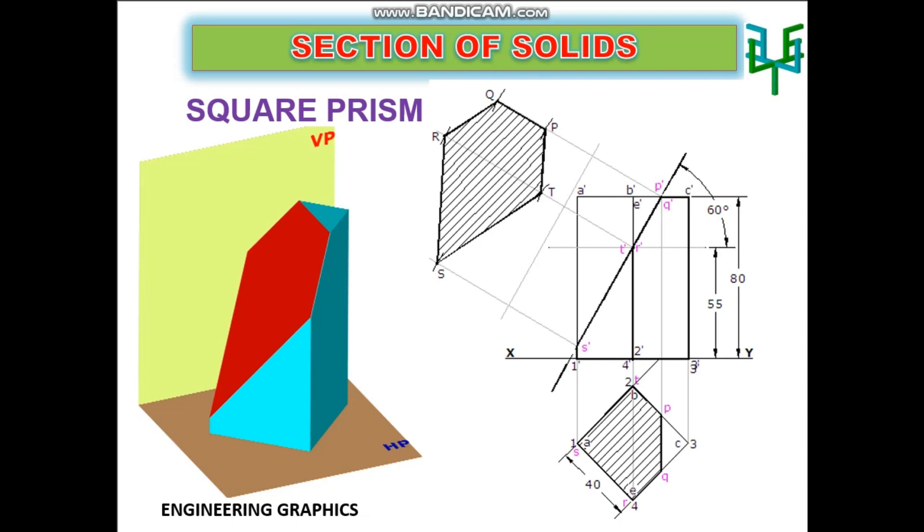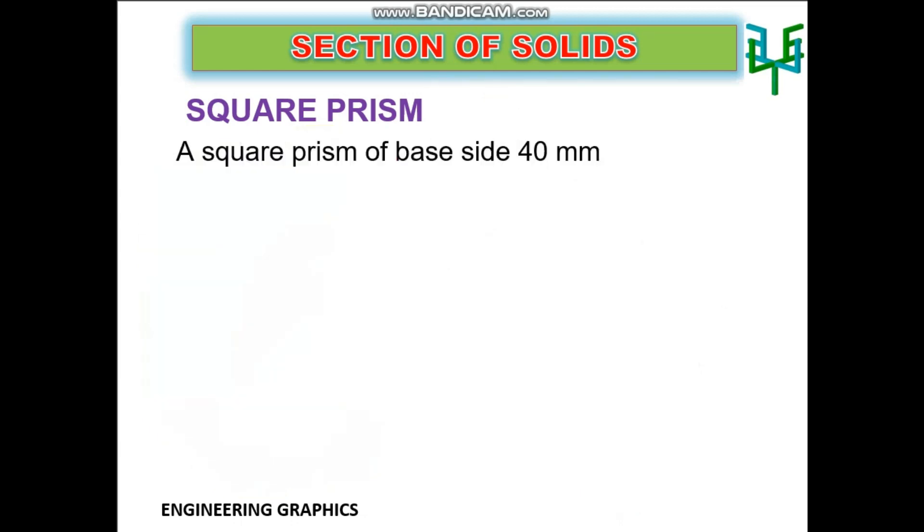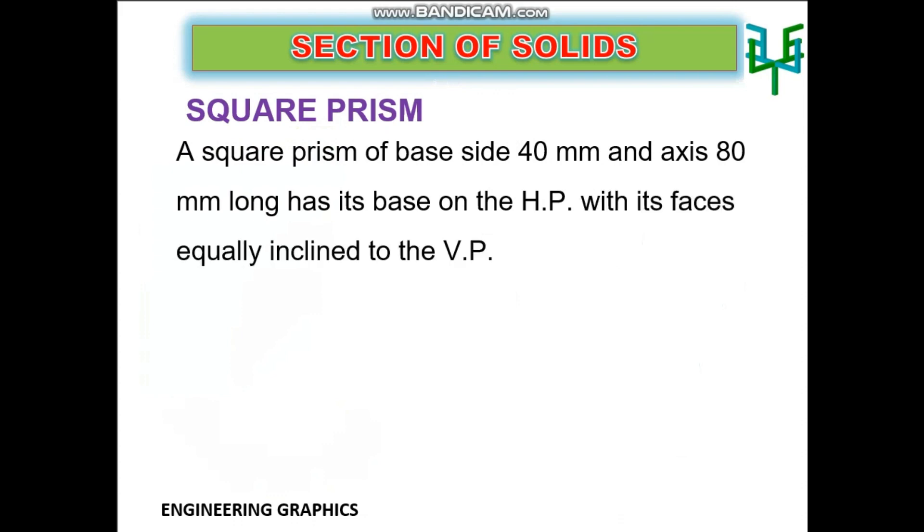This video explains section of a square prism. Let us discuss this with a problem. A square prism of base side 40 mm and axis 80 mm long has its base on the HP with its faces equally inclined to the VP.